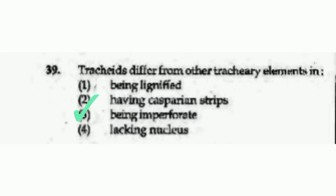Tracheids differ from other tracheary elements in — options are being lignified, having Casparian strips, being imperforate, or lacking a nucleus. The right answer is option number 3, being imperforate.